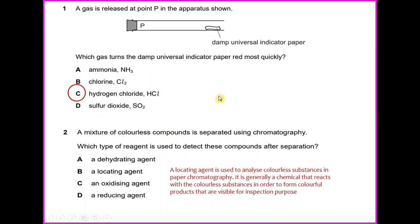A mixture of colorless compounds is separated using chromatography. Which type of reagent is used to detect these compounds after separation? A locating agent is used to analyze colorless substances in paper chromatography. It is generally a chemical that reacts with the colorless substances to form colorful products that are visible for inspection purposes. The answer will be a locating agent, B.